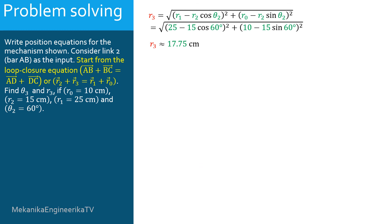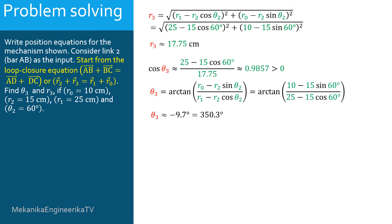To get R3, we substitute R1 by 25, R0 by 10, R2 by 15, and theta 2 by 60 degrees. Using a calculator gives R3 equal to approximately 17.75 cm. Substituting R1, R2, and theta 2 by their numerical values and using a calculator, we obtain that cosine theta 3 is approximately equal to 0.9857, which is a positive value. As the cosine is positive, we don't need to add 180 degrees to the arctangent of the ratio. Substituting R0, R1, R2, and theta 2 in the expression of theta 3 and using a calculator, theta 3 is approximately equal to minus 9.7 degrees, or equivalently 350.3 degrees.